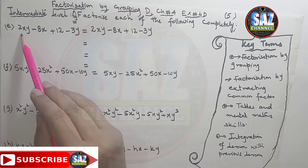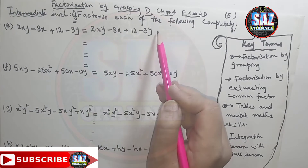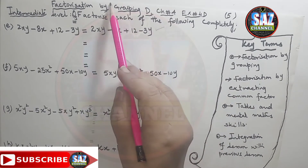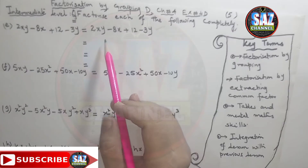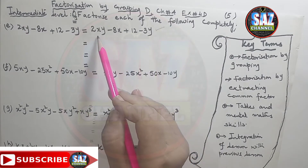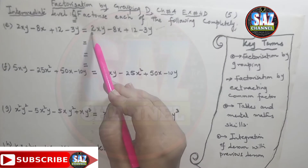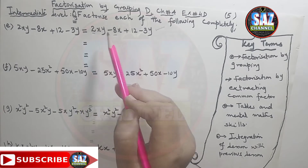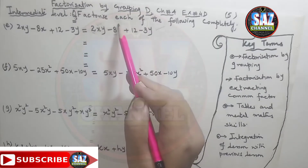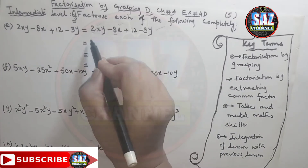The first part of the question is 2xy minus 8x plus 12 minus 3y. It's always good to rewrite the question. As the topic is factorization by grouping, after writing the question you have to see that from these four terms, which two terms can be put in one group. If you look at 2xy minus 8x, we can see that from the numbers 2 and 8, 2 is the common factor, and from the letters, x is the common letter. So this is the suitable choice — we can make one group from these two terms.